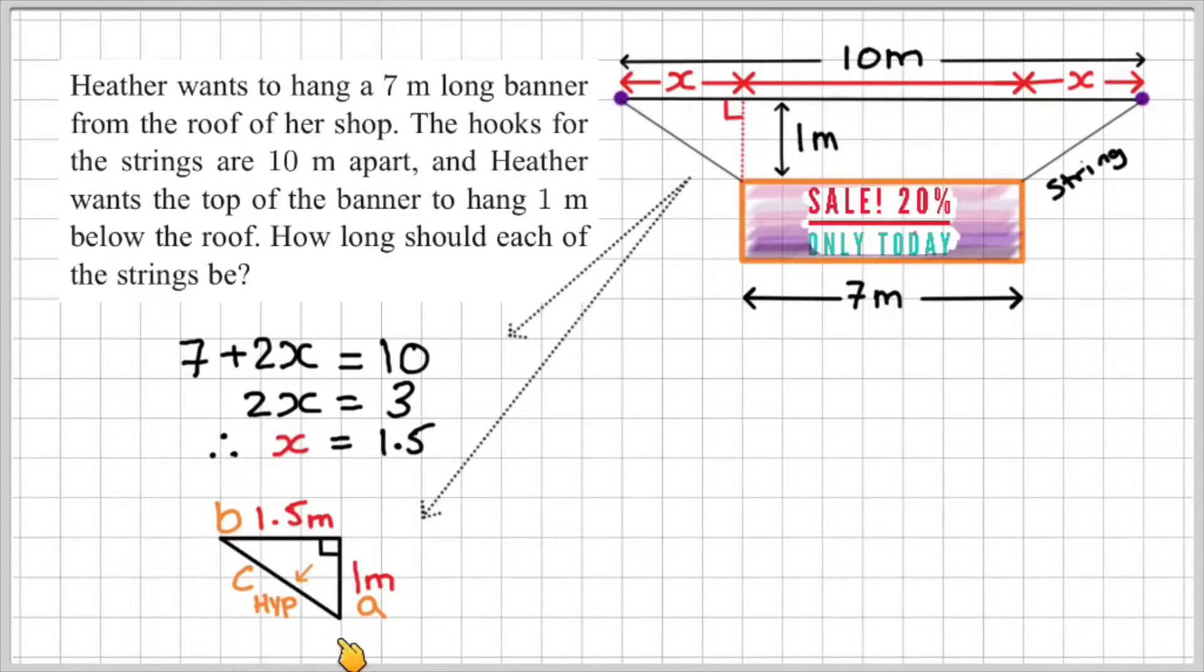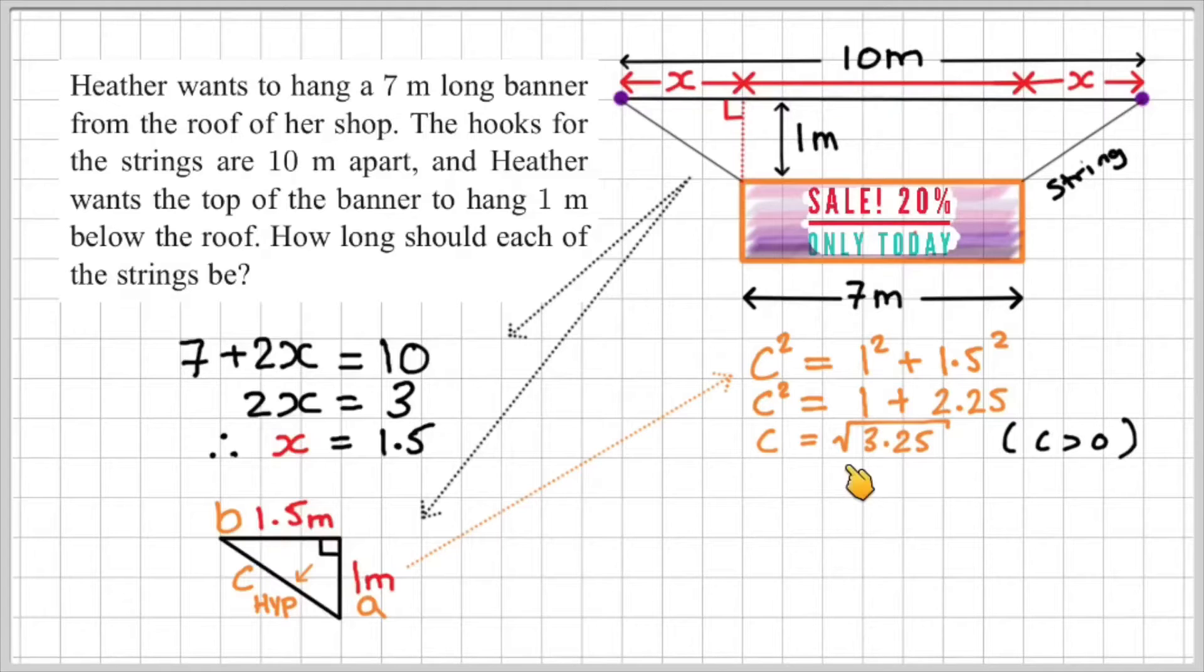So now I can substitute these values into the Pythagoras equation, which would give me c squared is equal to 1 squared plus 1.5 squared. That would give me c squared is equal to 1 plus 2.25. And then c would be equal to the square root of 3.25. Remember, c must be positive. We only take the positive square root because the value of the string is going to be positive. It can't be a negative value. So the square root of 3.25 is about 1.8. And therefore each string should be about 1.8 meters.